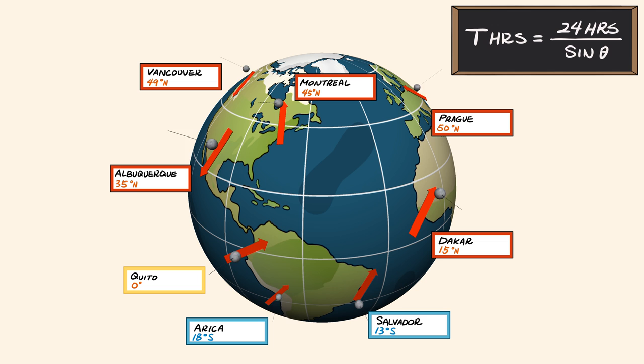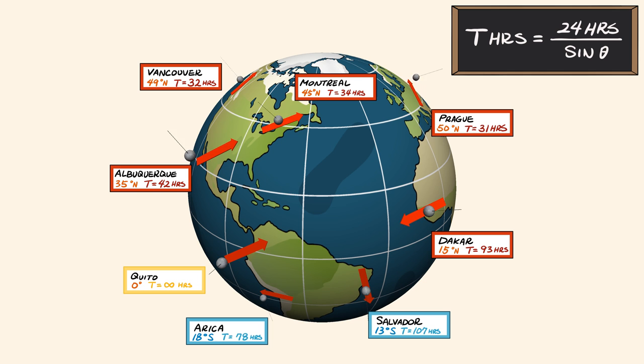But as it turns out, every single pendulum around the world rotates exactly as Foucault predicted they would if earth were a round rotating globe. And that's how we know earth is a spinning sphere rather than a flat disc.